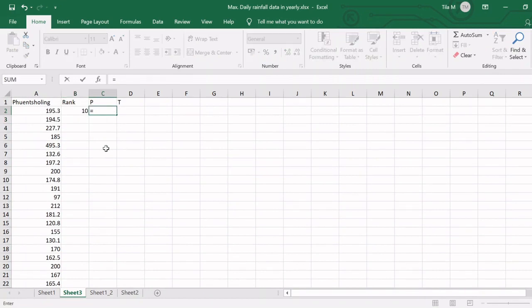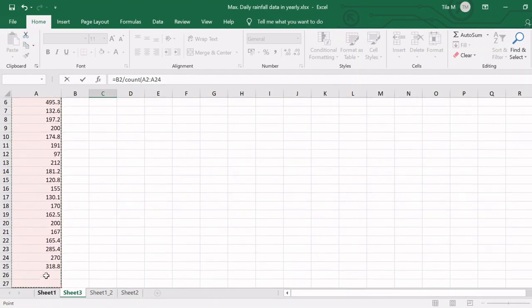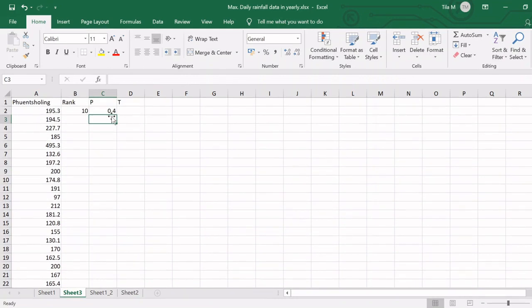Now likewise, I can calculate the probability. Probability is, according to Weibull, it is rank divided by number of observation plus one. To calculate number of observation, we can use the function count. I want it to be static, so I am putting dollar sign in between this count plus one. Let me put everything within the parenthesis so that there is no error. I have calculated the rank and also the probability.